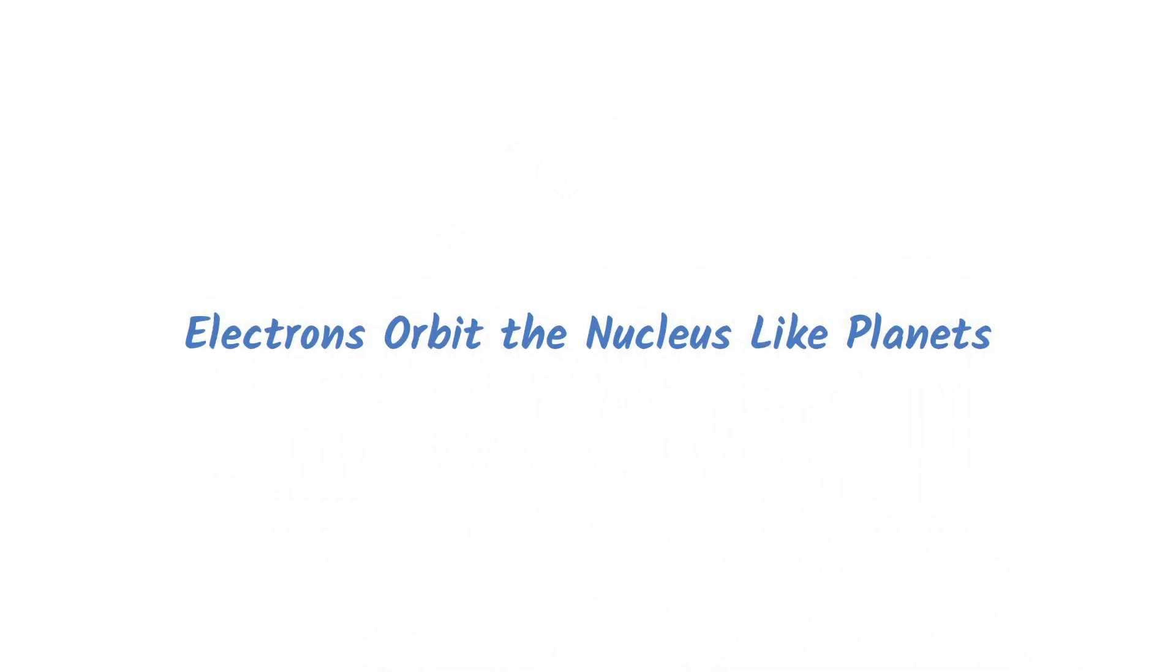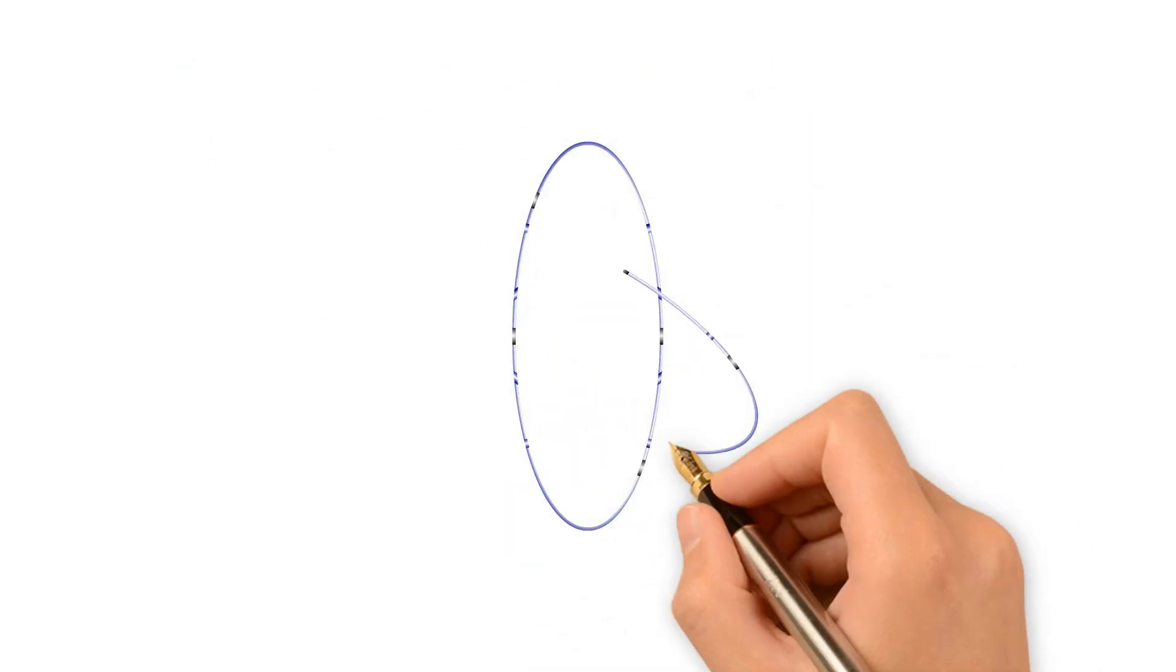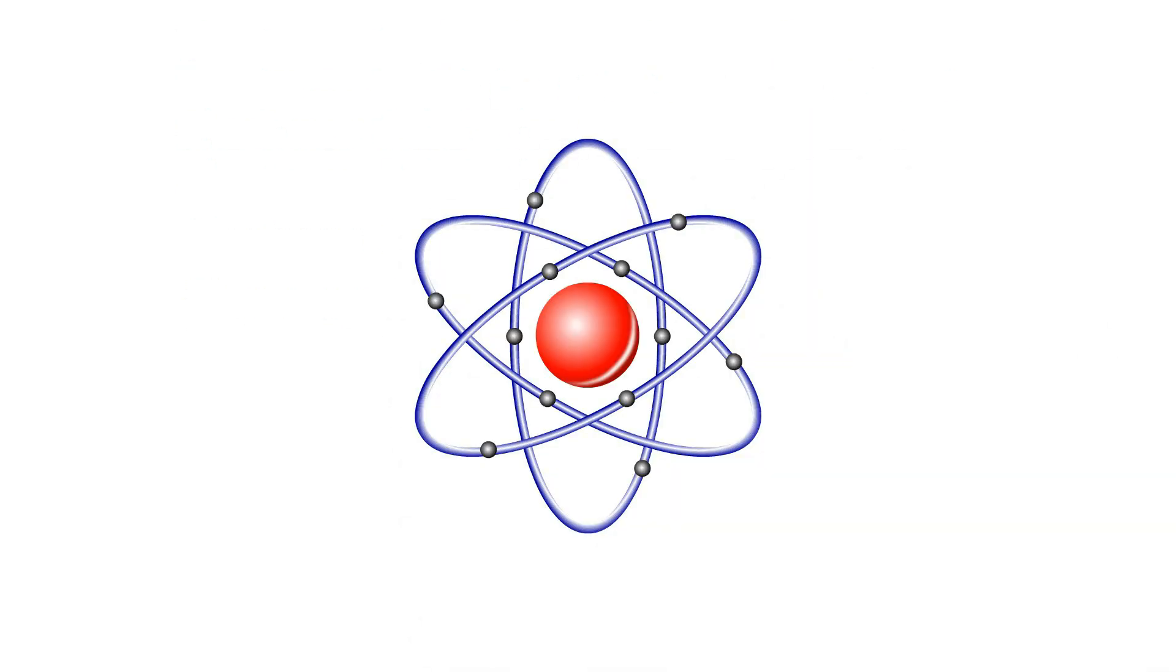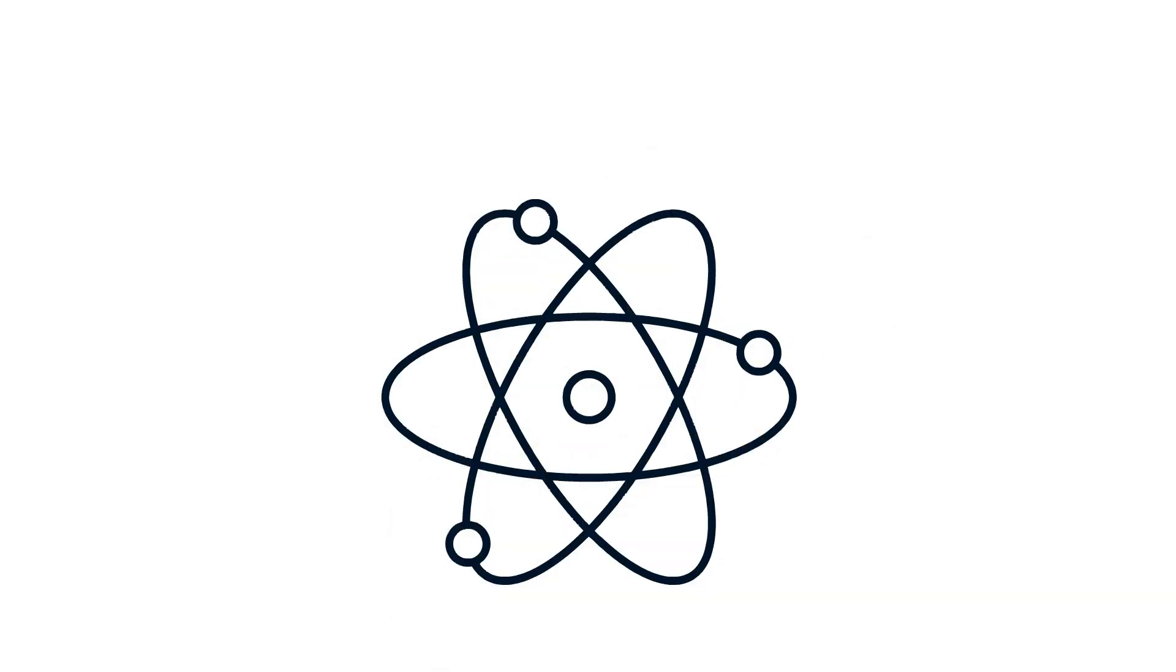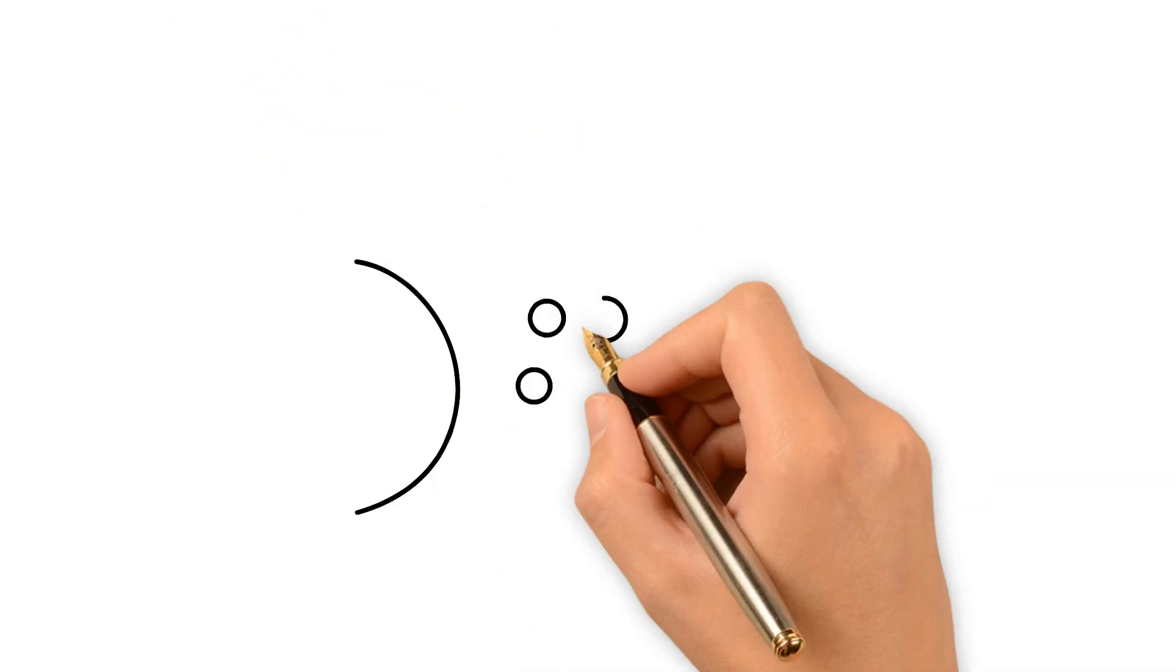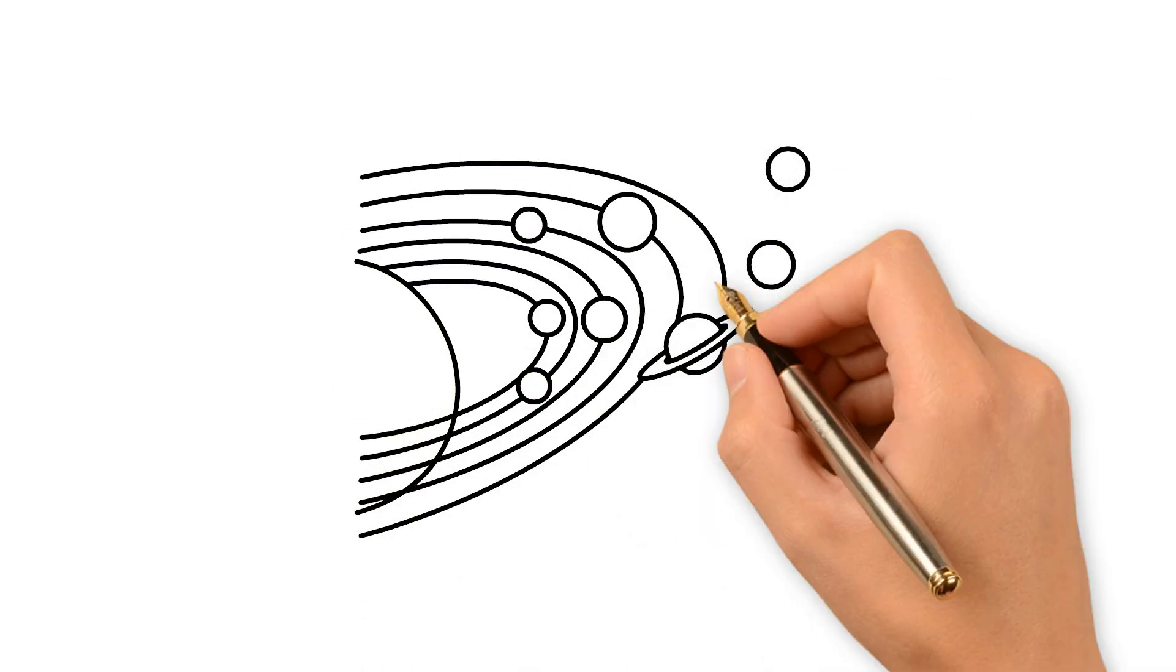Electrons orbit the nucleus like planets. Electrons exist in probability clouds, not neat circles. Their location is more likely than certain according to the laws of quantum mechanics. It's a more probabilistic model than a solar system analogy.